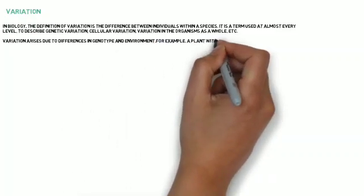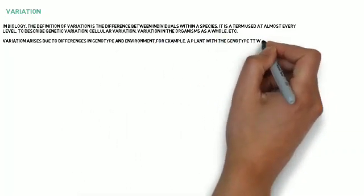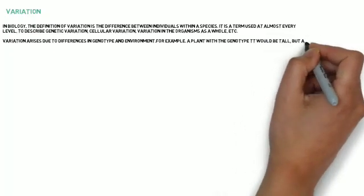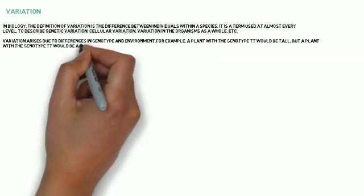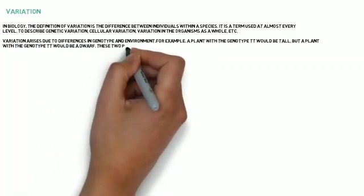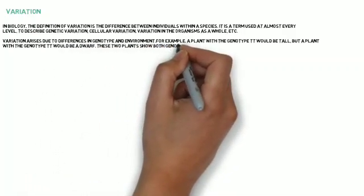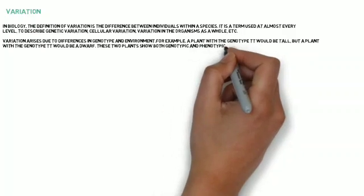For example, a plant with the genotype TT would be tall, but a plant with genotype tt would be a dwarf. These two plants show both genotypic and phenotypic variation.